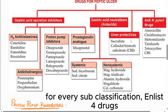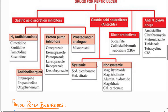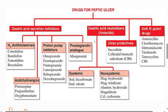Ulcer protectives protect the mucosal layer. According to the definition, we reduce and neutralize gastric acid, protect the mucosal layer, and kill other microbes. Ulcer protectives include sucralfate and colloidal bismuth subcitrate. Anti-H. pylori drugs are amoxicillin, clarithromycin, metronidazole, tinidazole, tetracycline, and colloidal bismuth subcitrate.